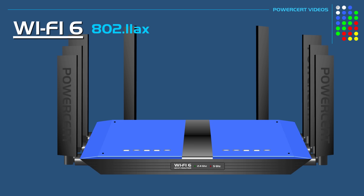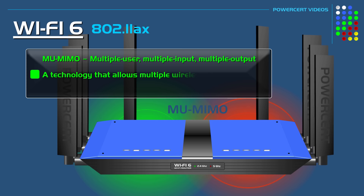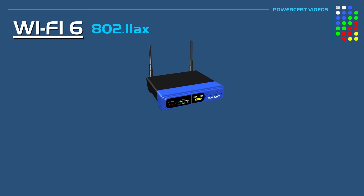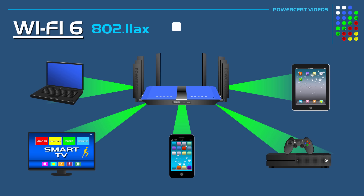Another technology that Wi-Fi 6 uses is MU-MIMO, which stands for Multiple User, Multiple Input, Multiple Output. This technology first made its debut in Wi-Fi 5 version 2, and it allows multiple wireless devices to communicate with a Wi-Fi router at the same time. Now before Wi-Fi 5, routers used SU-MIMO, which stands for Single User MIMO. This also allowed Wi-Fi routers to communicate with multiple devices, but only one device at a time, so each device would have to wait their turn. But with MU-MIMO, all connected devices won't have to wait because communication happens to multiple devices at the same time.